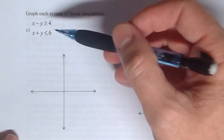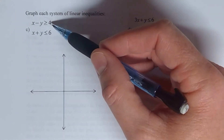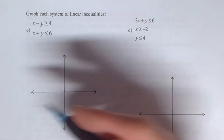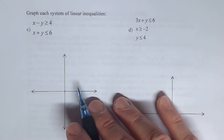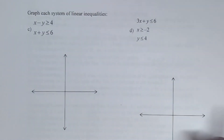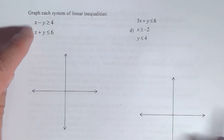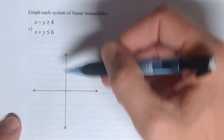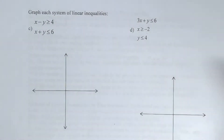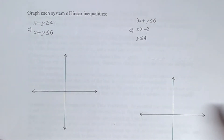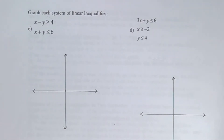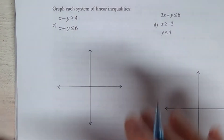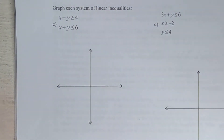Graphing the system of linear inequalities: when we graph a single inequality, we illustrate the solutions on a graph. If you want to find points that work for both inequalities, you put both on the same graph — don't put them on separate graphs. Then you'll be able to see which points are solutions to both — it's where the two different graphs, including the shadings, intersect each other.